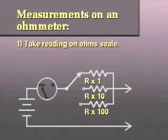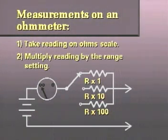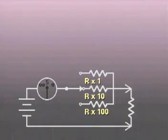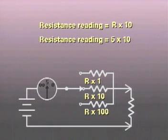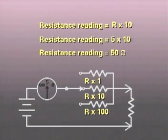Measurements are taken by first noting the reading indicated by the pointer on the ohm scale. The number is then multiplied by the range setting. For example, if this ohmmeter is set to r times 10, and it measures a resistance of 5 on the meter scale, that 5 needs to be multiplied by 10. The resistance we have measured, therefore, equals 50 ohms.